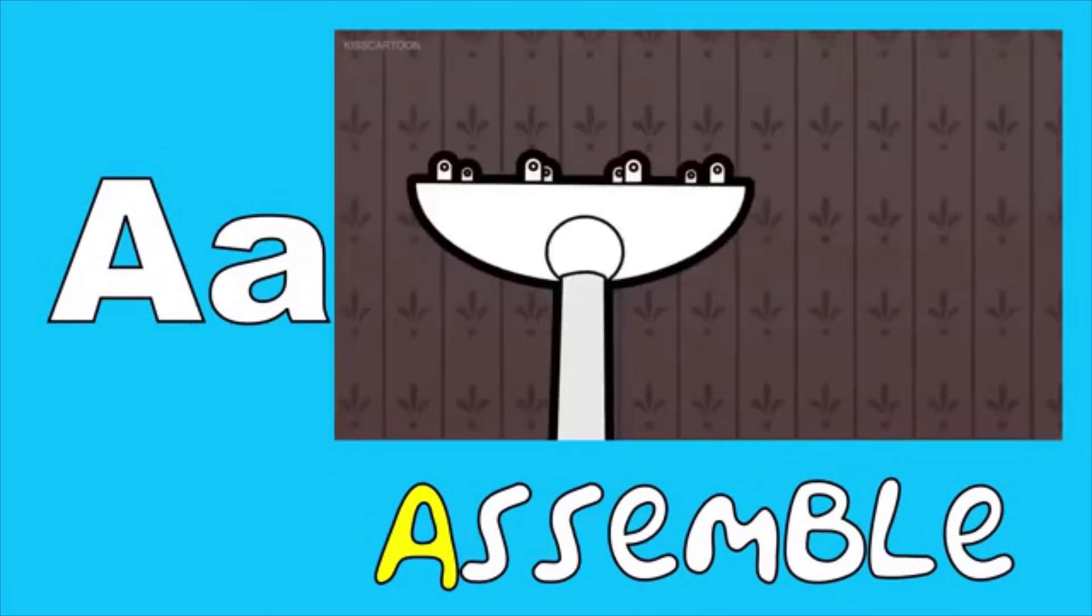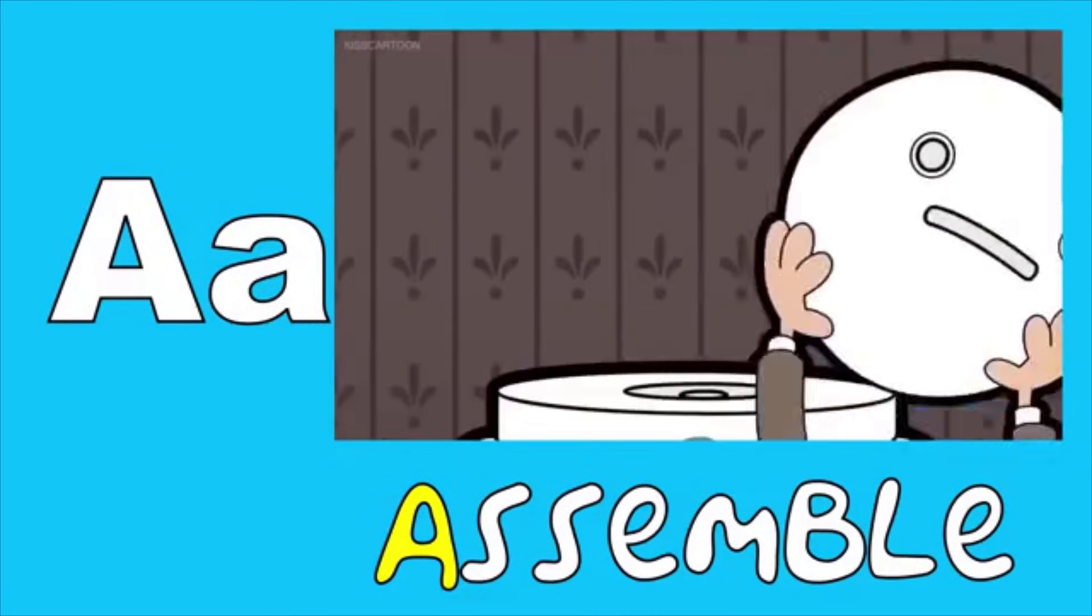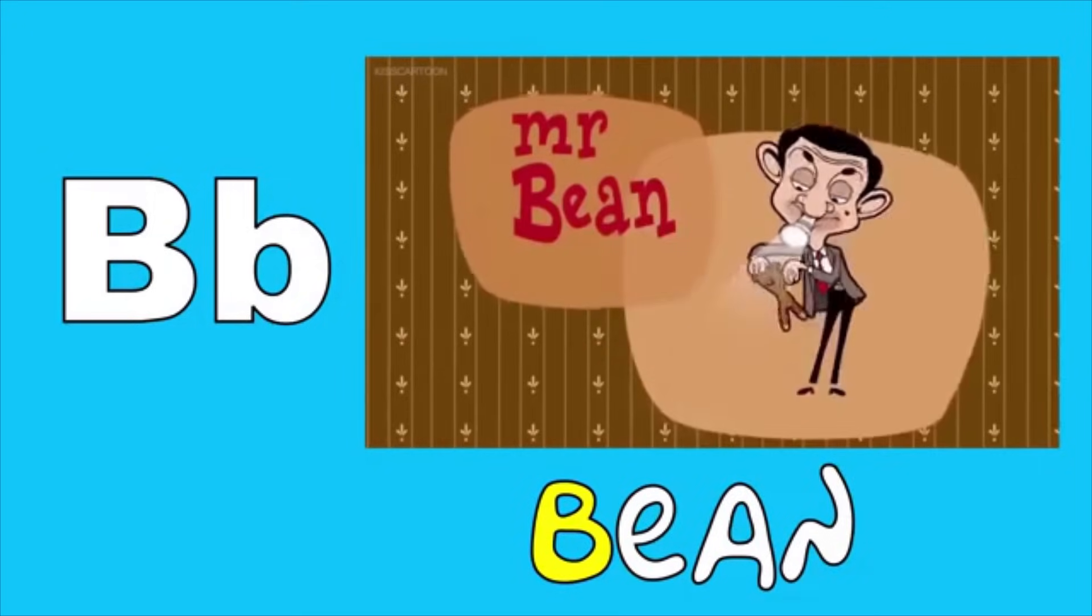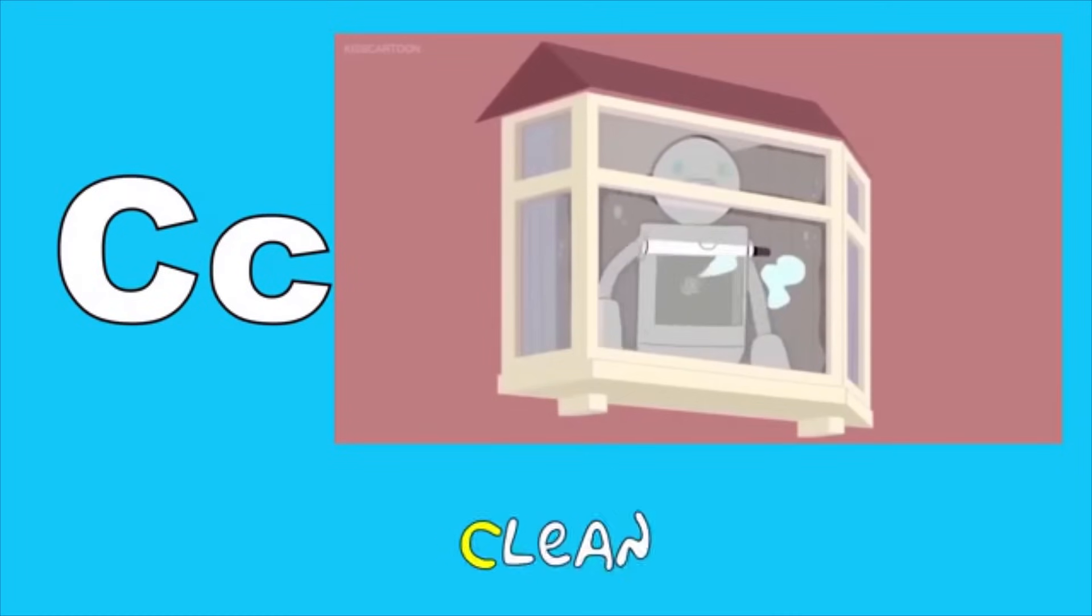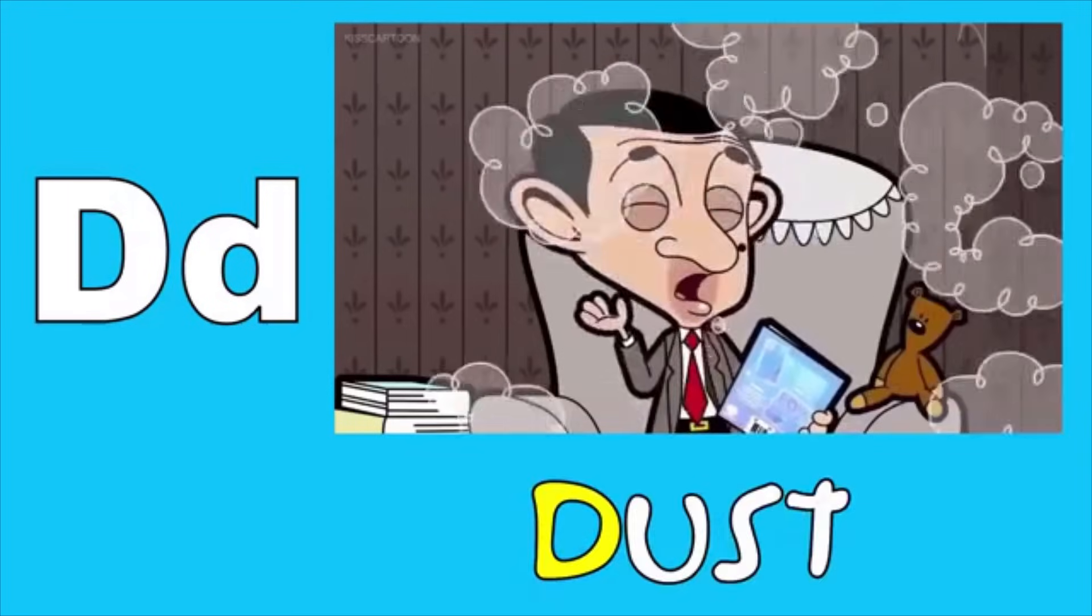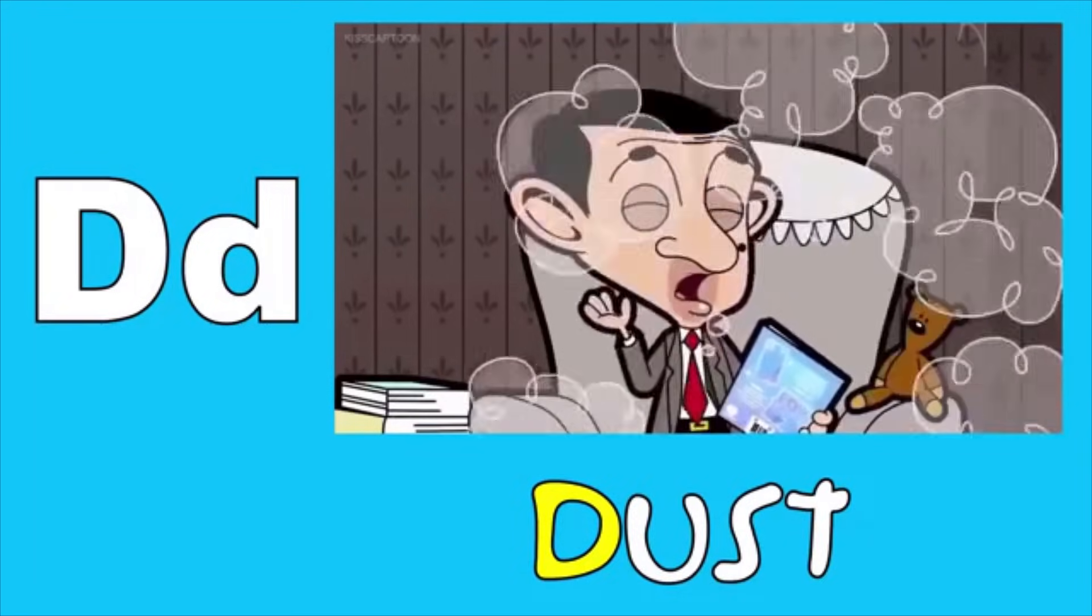A is for assemble, eh, eh, assemble. B is for bean, b, b, bean. C is for clean, k, k, clean. D is for dust, d, d, dust.